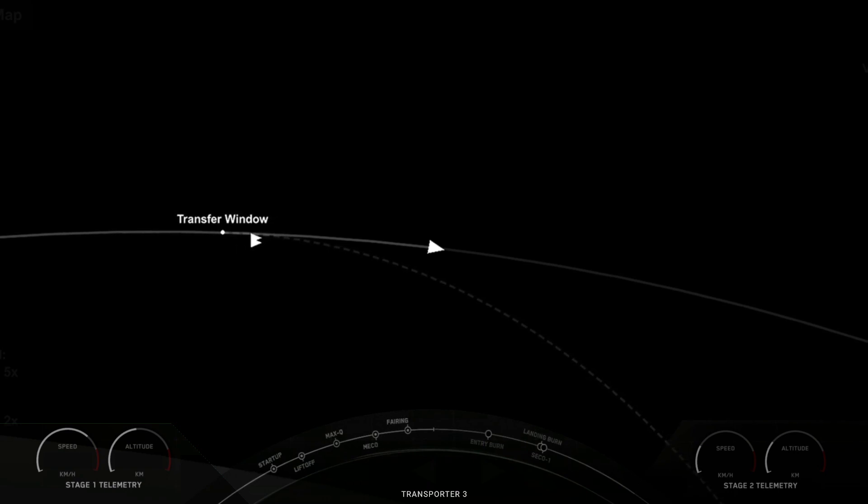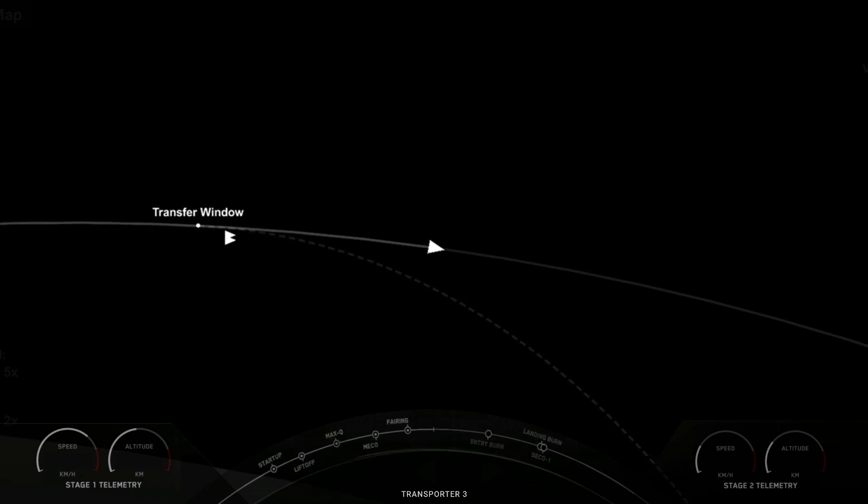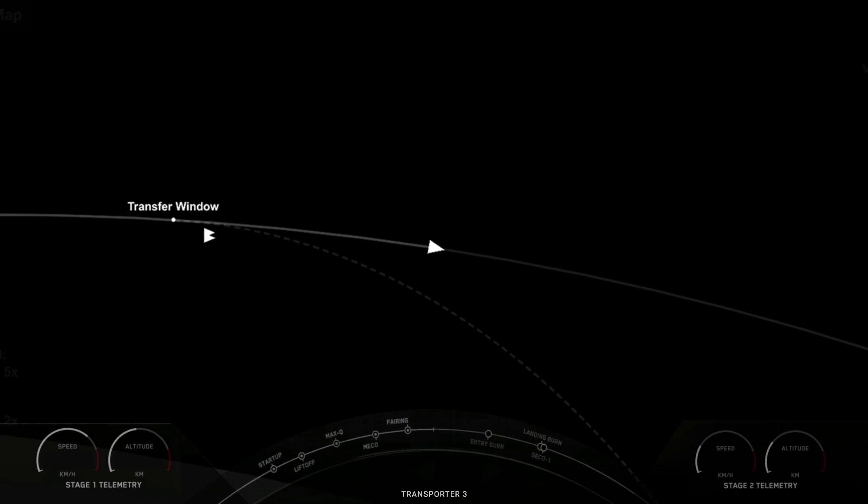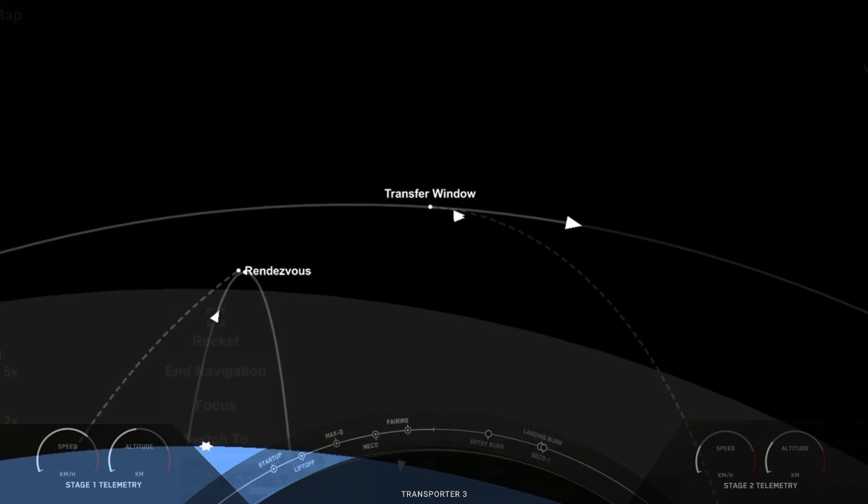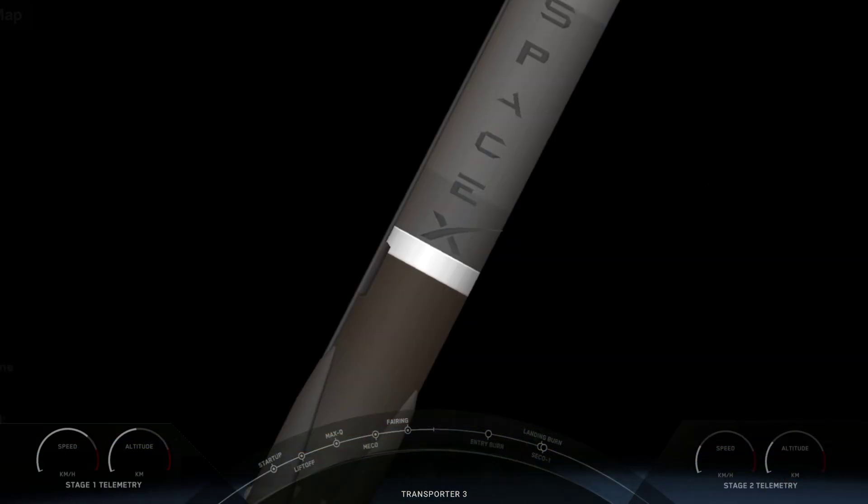SpaceX is targeting at least three dedicated rideshare flights to sun synchronous orbit per year and we also offer opportunities for a ride to orbit on our Starlink missions which launch every couple of weeks. Small sats can ride to space on SpaceX's Falcon 9, Falcon Heavy, as well as Starship in the not too distant future.